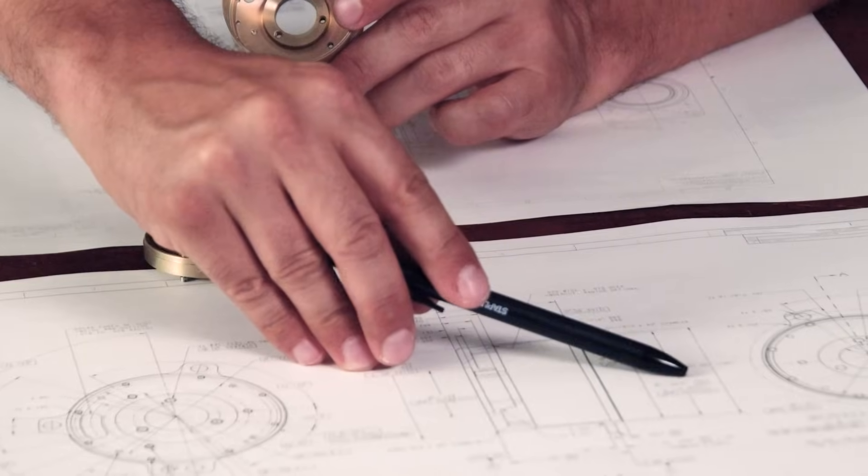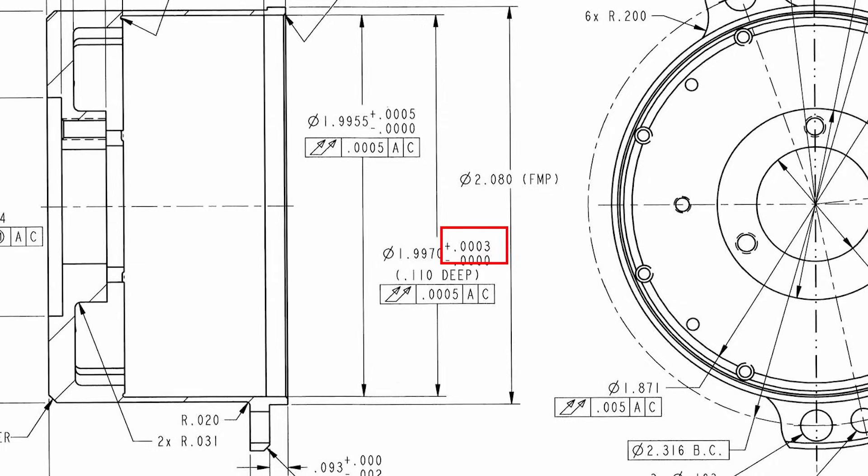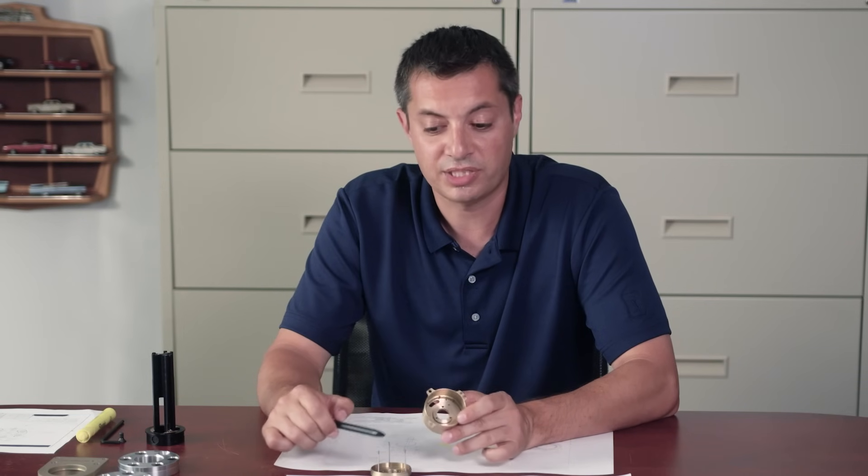Here's another one, 0.0003 tenths of an inch. That would almost be dividing your piece of hair by 10. So those are the kind of precision tolerances we're dealing with.